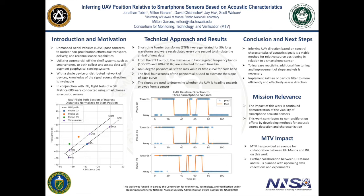The orange line corresponds to the true position of the UAV relative to that smartphone. The blue dot represents the predicted value as we move forward in time. We can see that this method reasonably matches the pattern of the true UAV movement, though slightly over-predicts when the UAV changes direction relative to the smartphone.